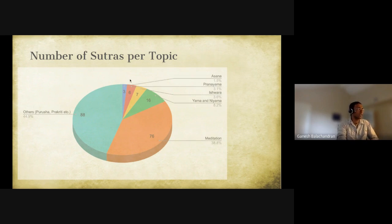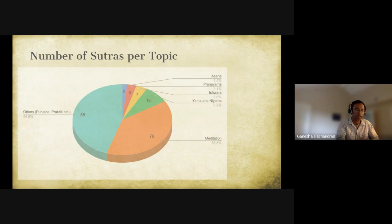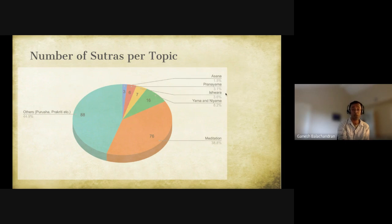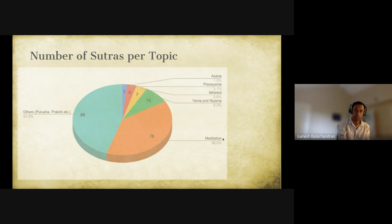People typically think yoga is just asanas, but that's not true. Patanjali has allocated only three sutras to asanas — about one and a half percent of the total 195 or 196 sutras. There are six sutras on pranayama, seven on ishwara, and 16 on yama and niyamas, which are the foundation for yoga. There are 76 on meditation and the remaining 88 on purusha, prakriti, karma, and related topics.